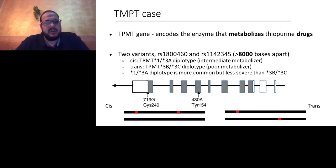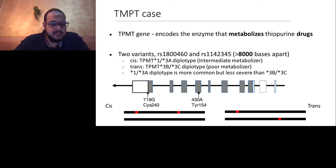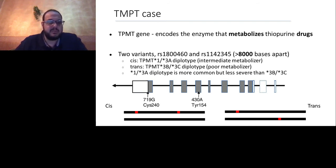In the trans case, one variant happens in the first copy and the other happens in the second copy, meaning both copies of the enzyme are not working. This leads to accumulation of drugs, which is not helpful and could cause intoxication. As you can see, we need not only to study variants but also whether they are associated together or not — which is called phasing.